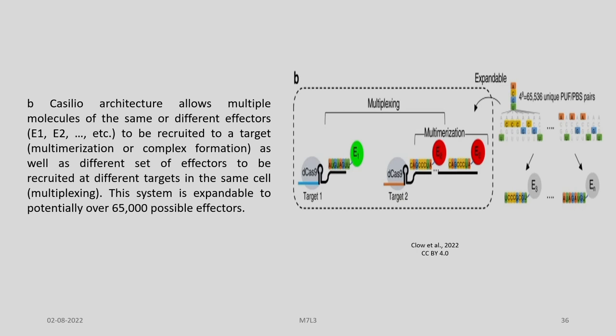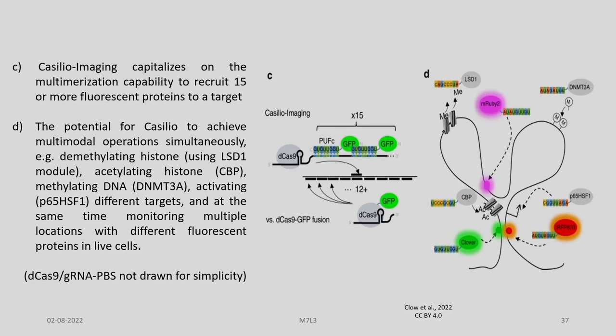This system is expandable to potentially over 65,000 possible effectors. CasSILO imaging capitalizes on the multimerization capability to recruit 15 or more fluorescent proteins to a target. The potential for CasSILO to achieve multimodal operations simultaneously — for example, demethylating histones using an LSD1 module, acetylating histones, methylating DNA, activating different targets, and at the same time monitoring multiple locations with different fluorescent proteins in live cells.